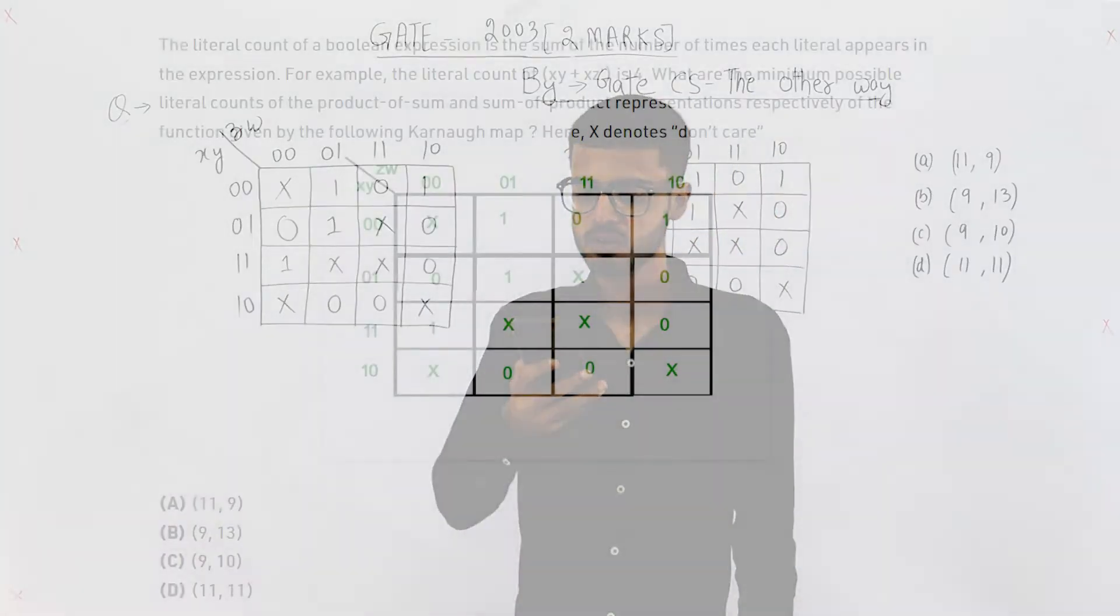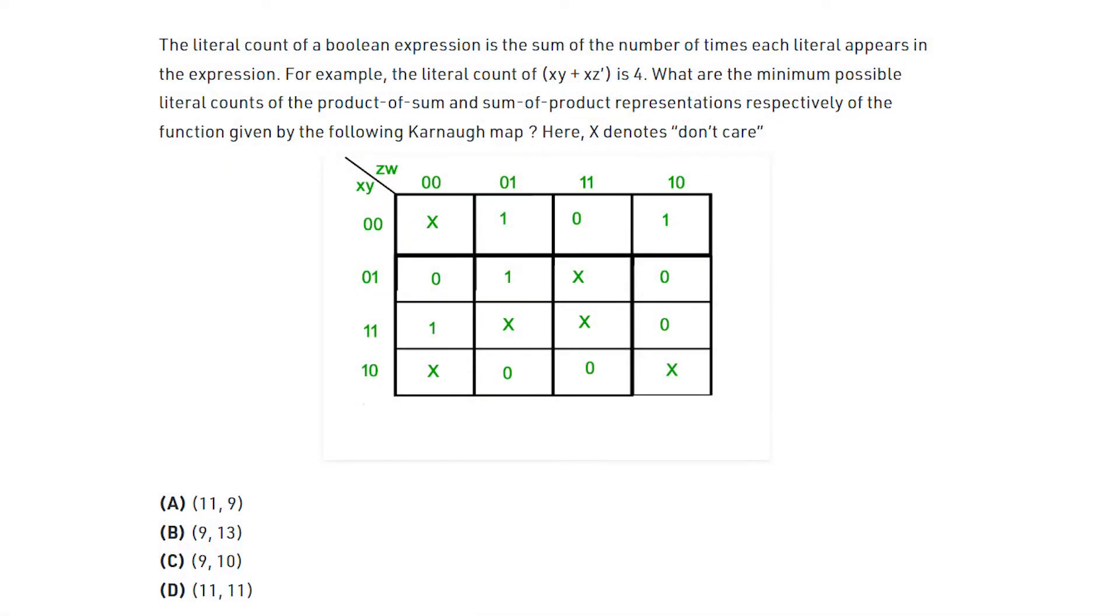It reads, the literal count of a boolean expression is the sum of number of times each literal appears in the expression. For example, the literal count of xy plus xz bar is 4. What are the minimum possible literal counts of product of sum and sum of product representations respectively of the function given by the following K-map. Here x denotes a don't care.